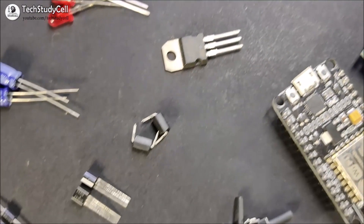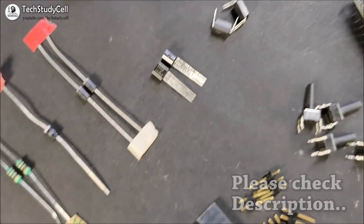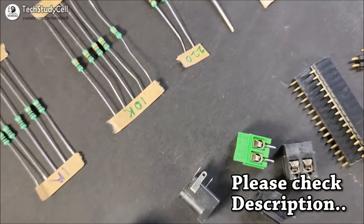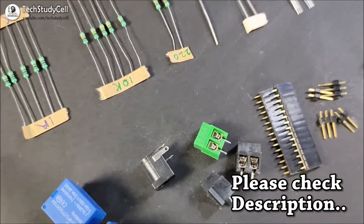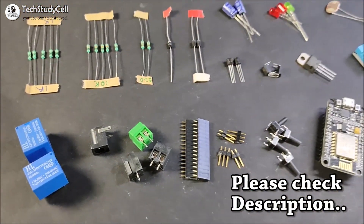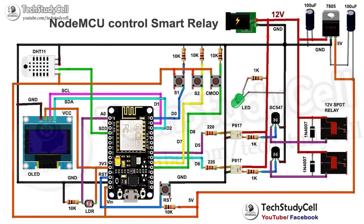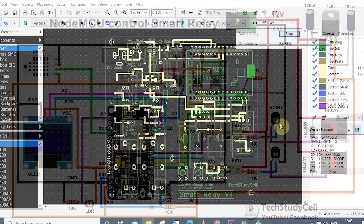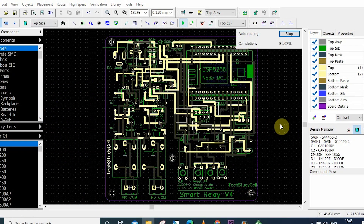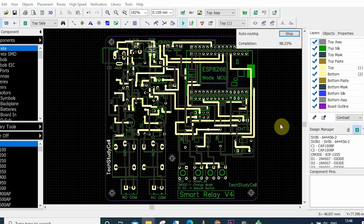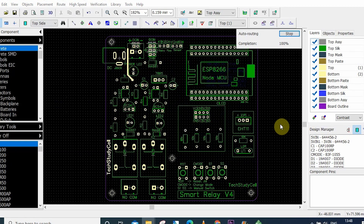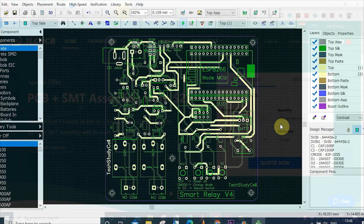These are the components required for this home automation project. I have shared all the details in the description. Now you need to connect these components as per this circuit diagram. As there are a lot of connections, to give the project a professional look and make the circuit compact, I have designed a PCB for this project and ordered it from JLCPCB.